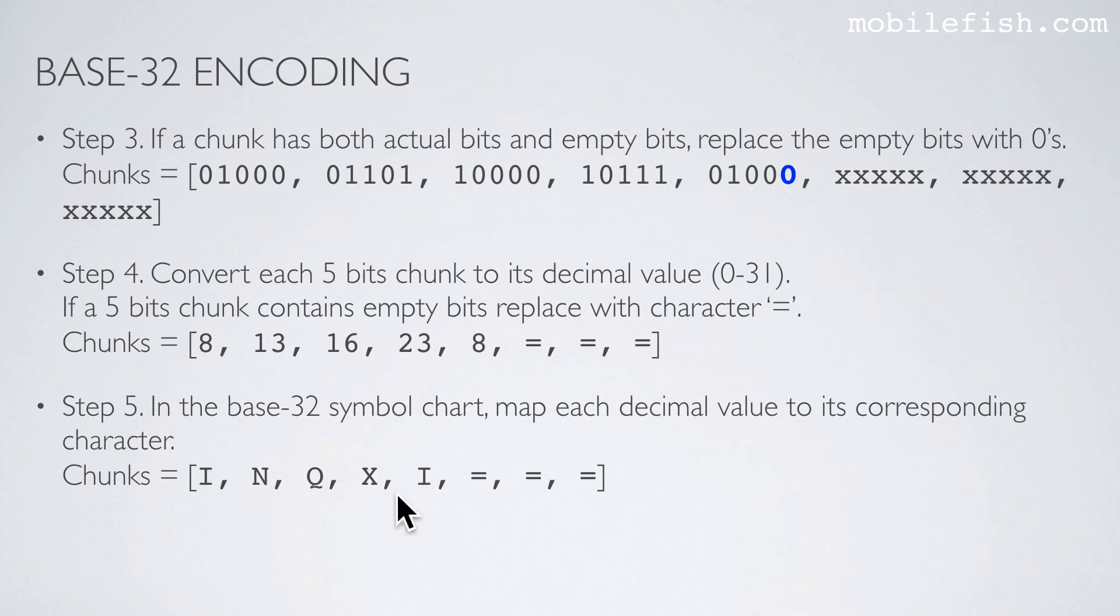As a result you get this. So the word Cat base32 encoded is this final value.